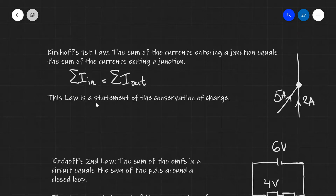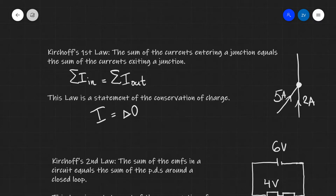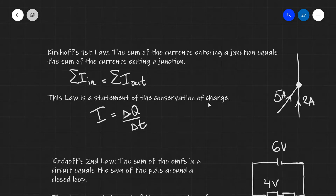This law is a statement of the conservation of charge. This is natural because the definition of current is the rate of flow of charge — in other words, I is equal to delta Q over delta T. So this law is really telling us that in a circuit, charge does not miraculously appear or is never miraculously lost.